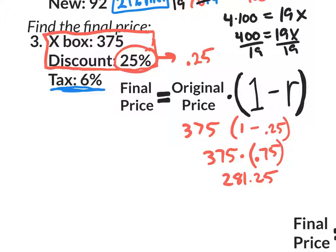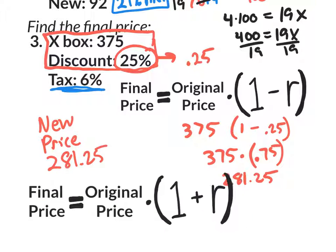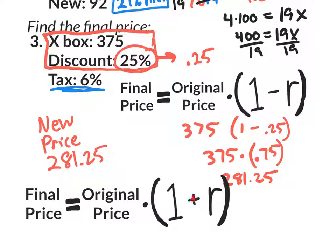So what did we just find here? We found our new price, our new price. And that was 281.25, our new discounted price, that is. So that's our discount, but we need to calculate taxes. Taxes are obviously going to increase the original, or the price that we now have. So we're going to use the one with the plus, because it's going to increase it.